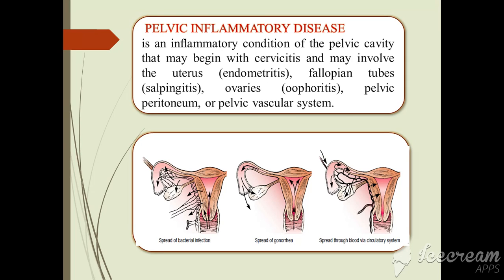Other transmission routes include bacterial infections that occur after childbirth or abortion. Pathogens are disseminated directly through the tissue supporting the uterus by way of lymphatic and blood vessels. Additionally, gonorrhea may spread through the cervix and enter the uterus, then to the fallopian tubes, and then to the pelvic cavity.